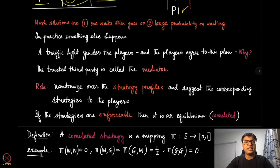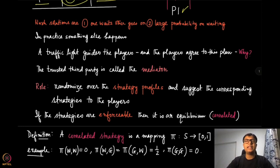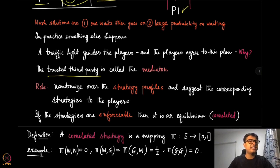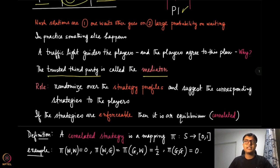In practice there is a device — a traffic light or traffic police — that guides the players. Players essentially agree to this plan: the traffic light tells one direction to go and the cross-road to wait, then switches. This third party — the traffic light — is called a trusted third party.